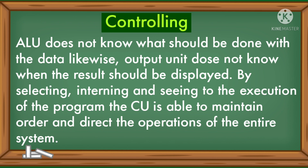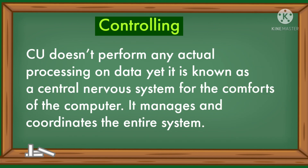The ALU does not know what should be done with the data, and likewise the output unit does not know when the result should be displayed. By selecting, interpreting, and seeing to the execution of the program, the CPU is able to maintain order and direct the operations of the entire system. The control unit (CU) does not perform any actual processing on data, yet it is known as the central nervous system of the computer — it manages and coordinates the entire system.